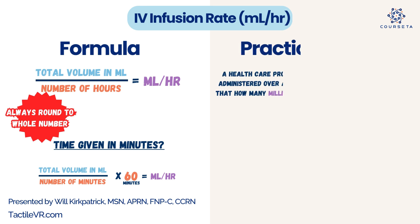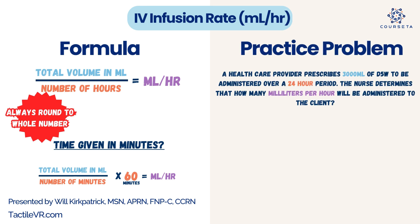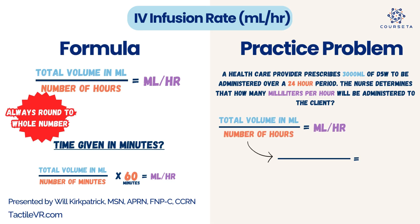Practice problem: a healthcare provider prescribes 3,000 mL of D5W to be administered over a 24-hour period. The nurse determines how many mL per hour will be administered. Total volume is 3,000 mL, and the time is 24 hours. So 3,000 divided by 24 equals 125 mL per hour.